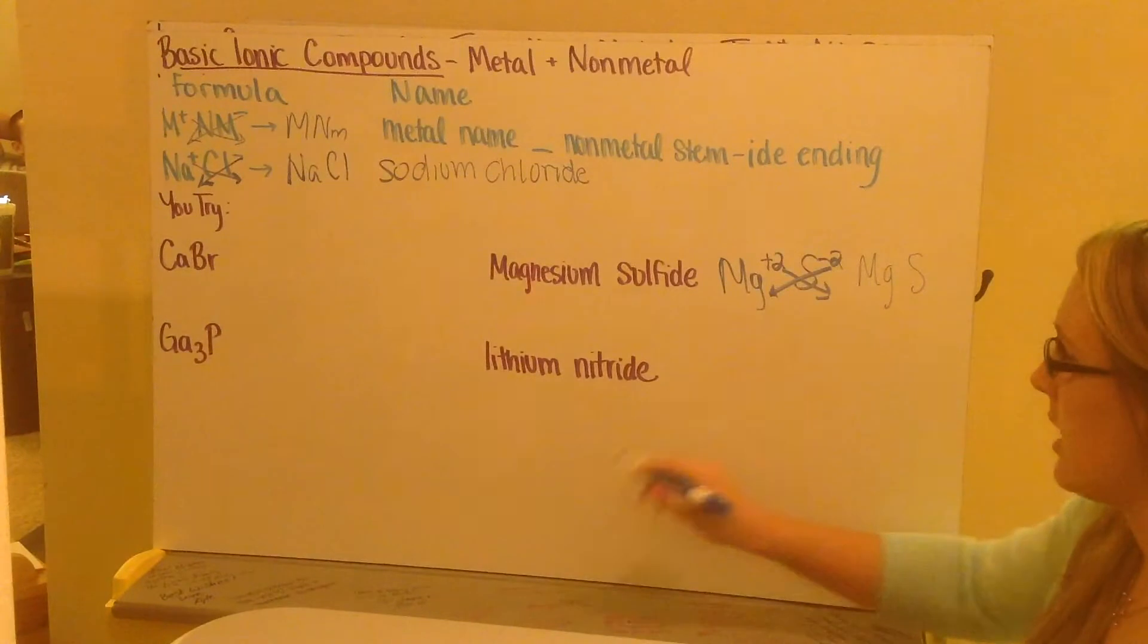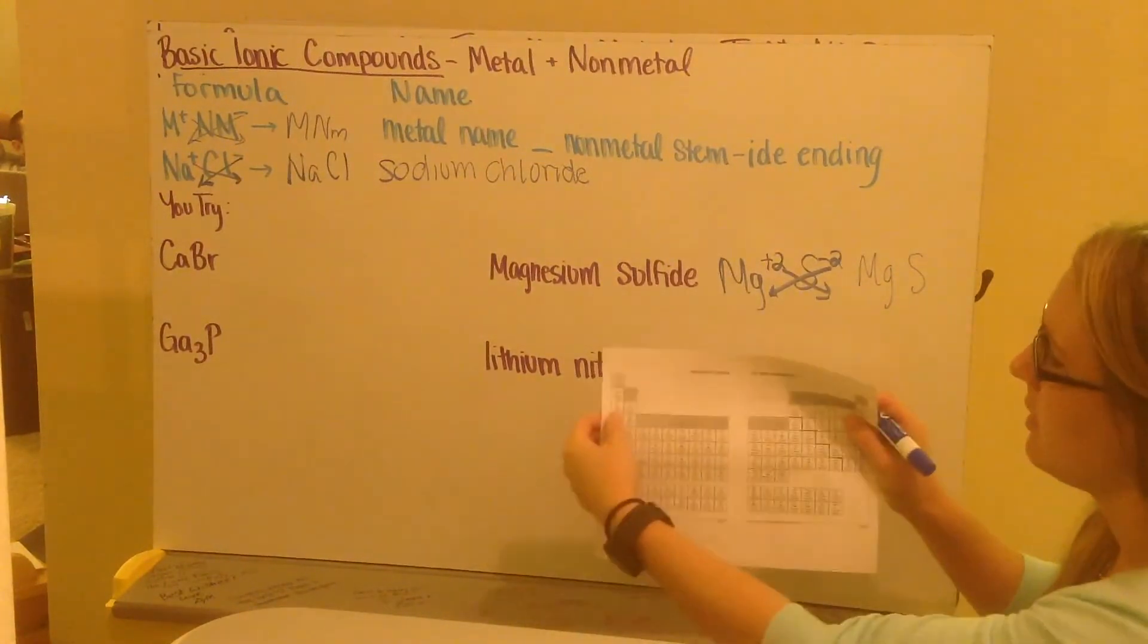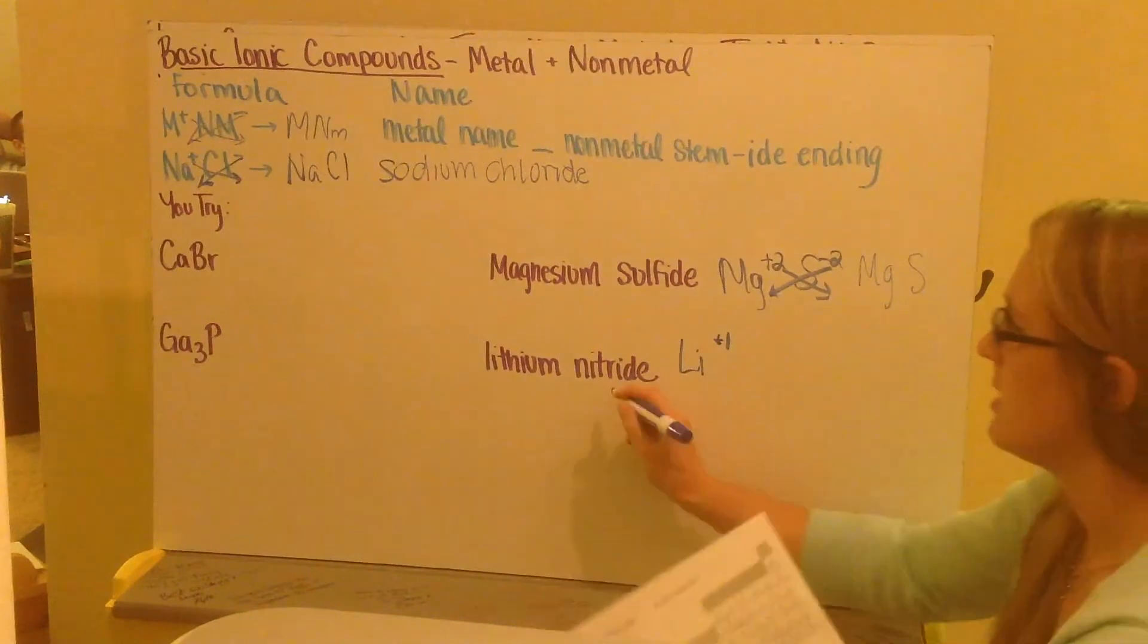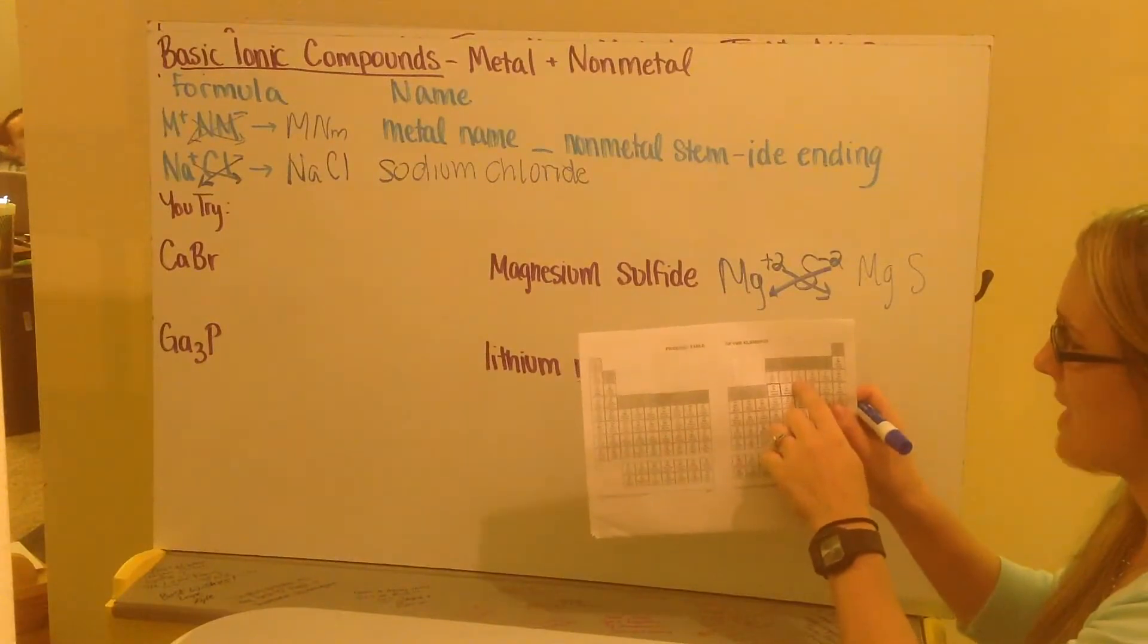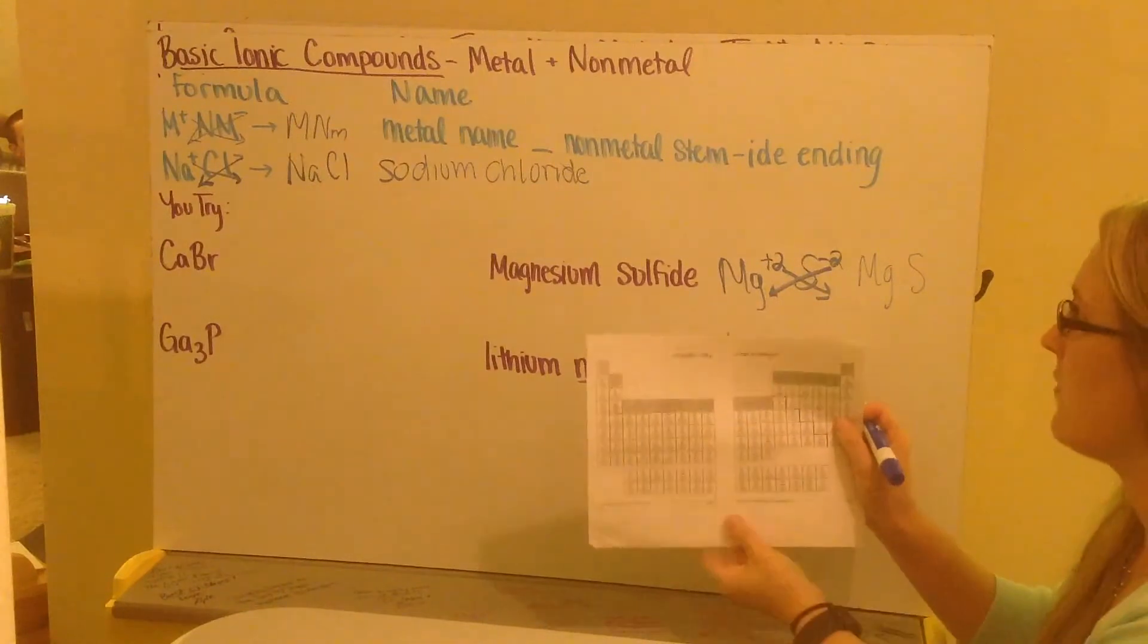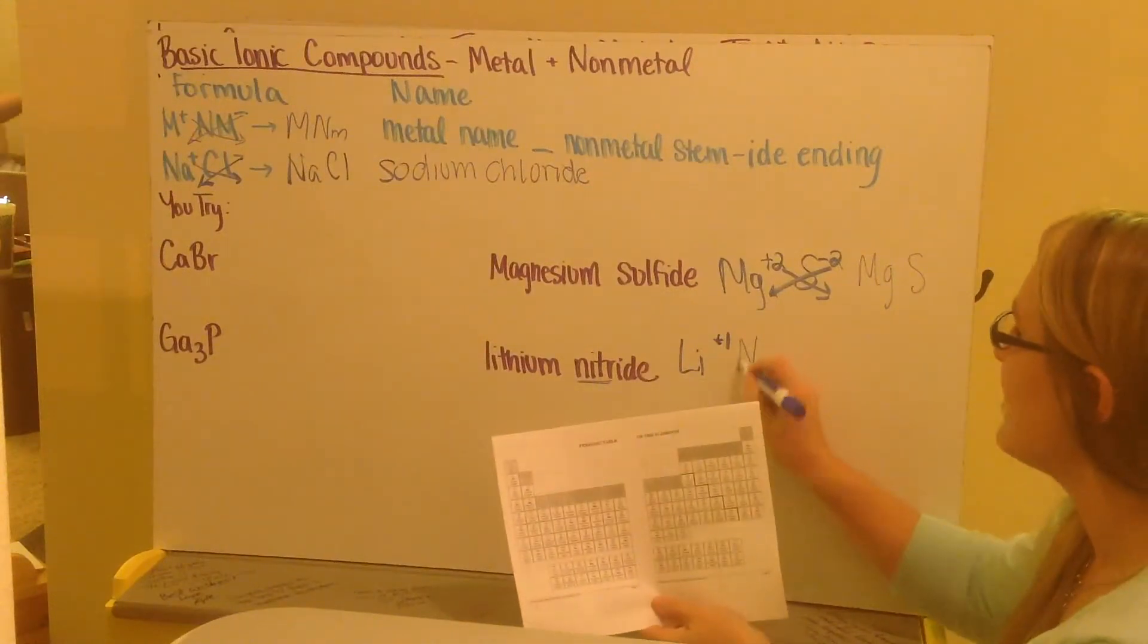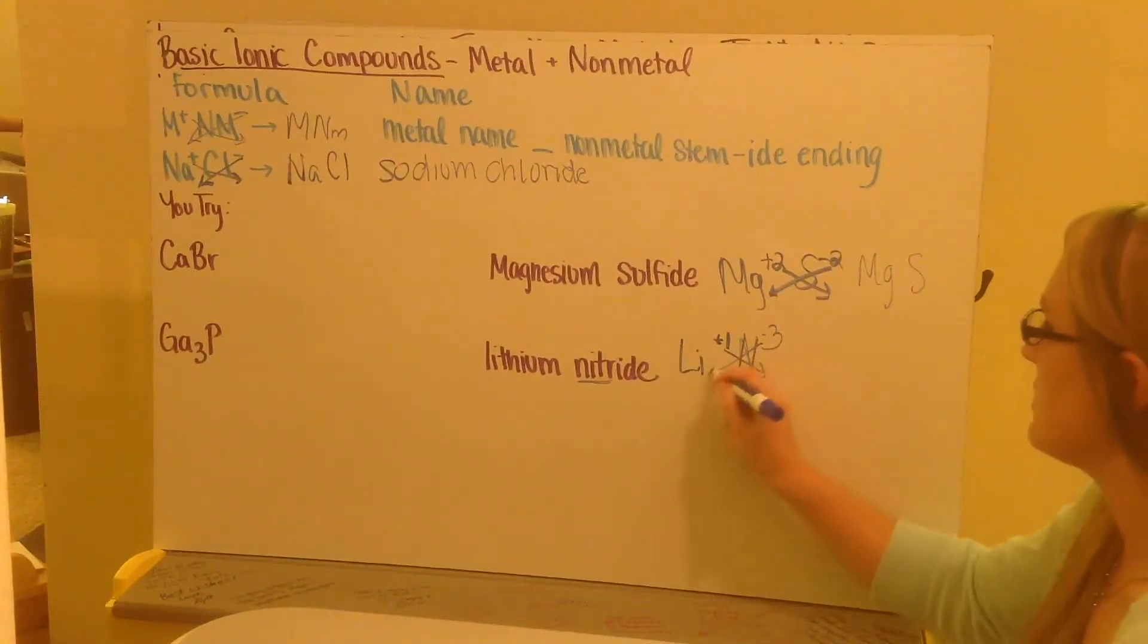Next I have lithium nitride. Lithium is our metal. Lithium is at number three. Lithium has one valence electron. So it becomes lithium plus one. Nitride is nitrogen. It's in group seven. It has five valence electrons. It wants three more. Nitrogen wants three more electrons. So it'll have a charge of negative three. I criss-cross my values down. And I get Li3N for lithium nitride.